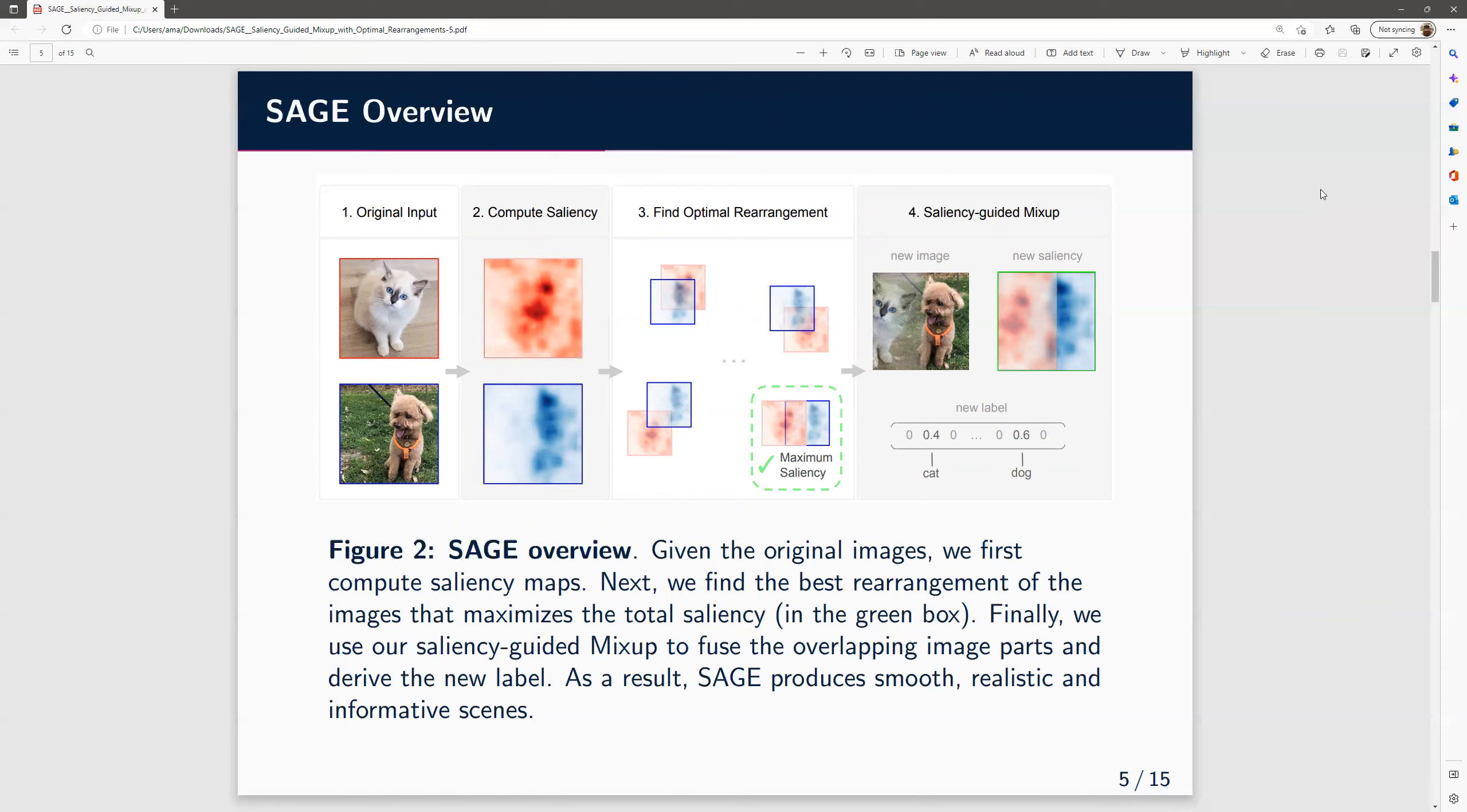Given the original image, we first compute saliency maps. Then we find the best rearrangement of the image that maximizes the total saliency, for instance, in the green box. Finally, we use our saliency-guided mix-up to fuse the overlapping images and derive the new label. As a result, SAGE produces smooth, realistic, and informative new scenes.